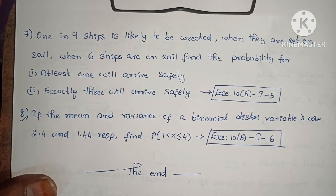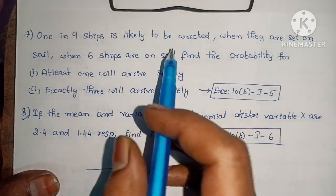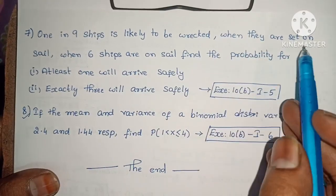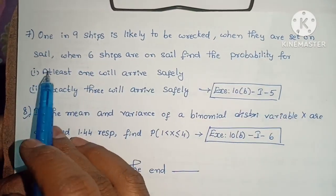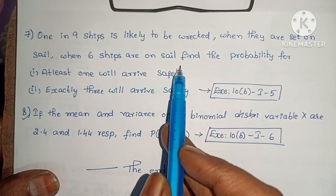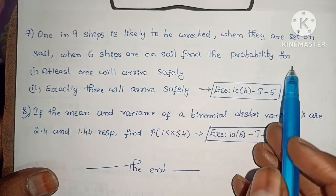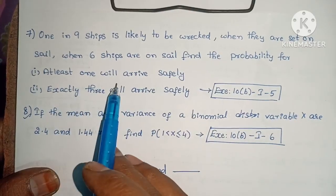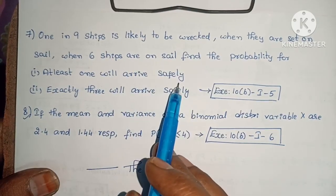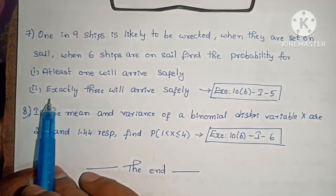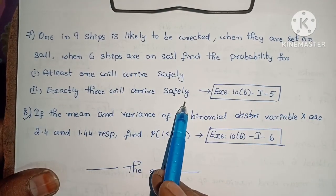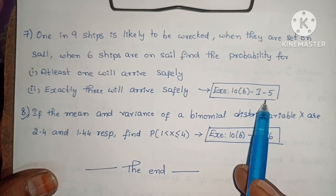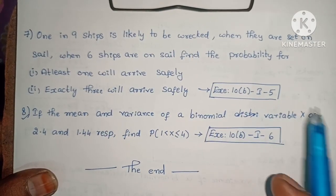1 in 9 ships is likely to be wrecked when set on sail. When 6 ships are on sail, find the probability that: (1) at least 1 will arrive safely, and (2) exactly 3 will arrive safely. Exercise 10, Section I, problem 5.